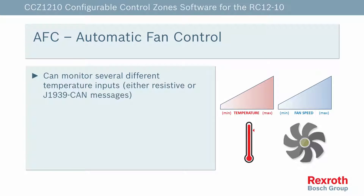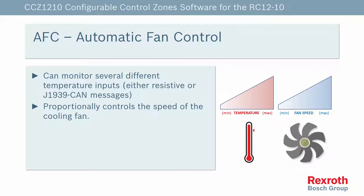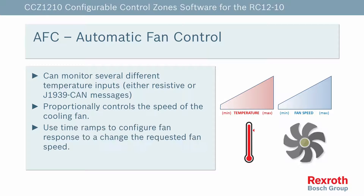The automatic fan control can monitor several different temperature inputs, either resistive or J1939 CAN messages, to proportionally control the speed of the cooling fan. Using time ramps, you can configure how quickly the fan responds to change in the requested fan speed.